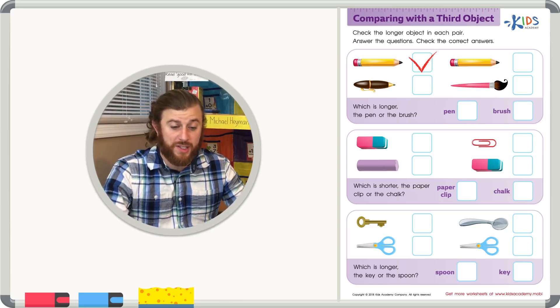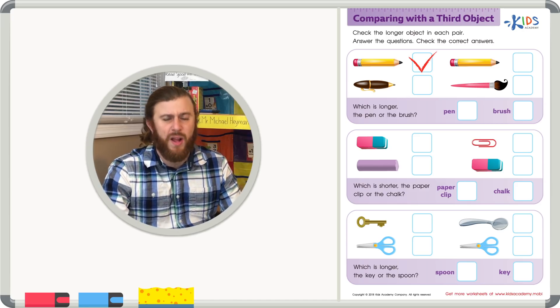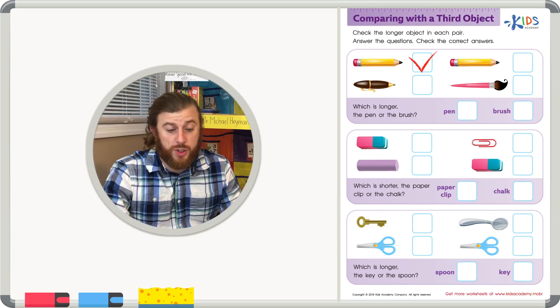Let's look at our next two objects. We have that same pencil and a paintbrush. Again, it's pretty easy to tell the paintbrush is longer. So let's check the paintbrush.